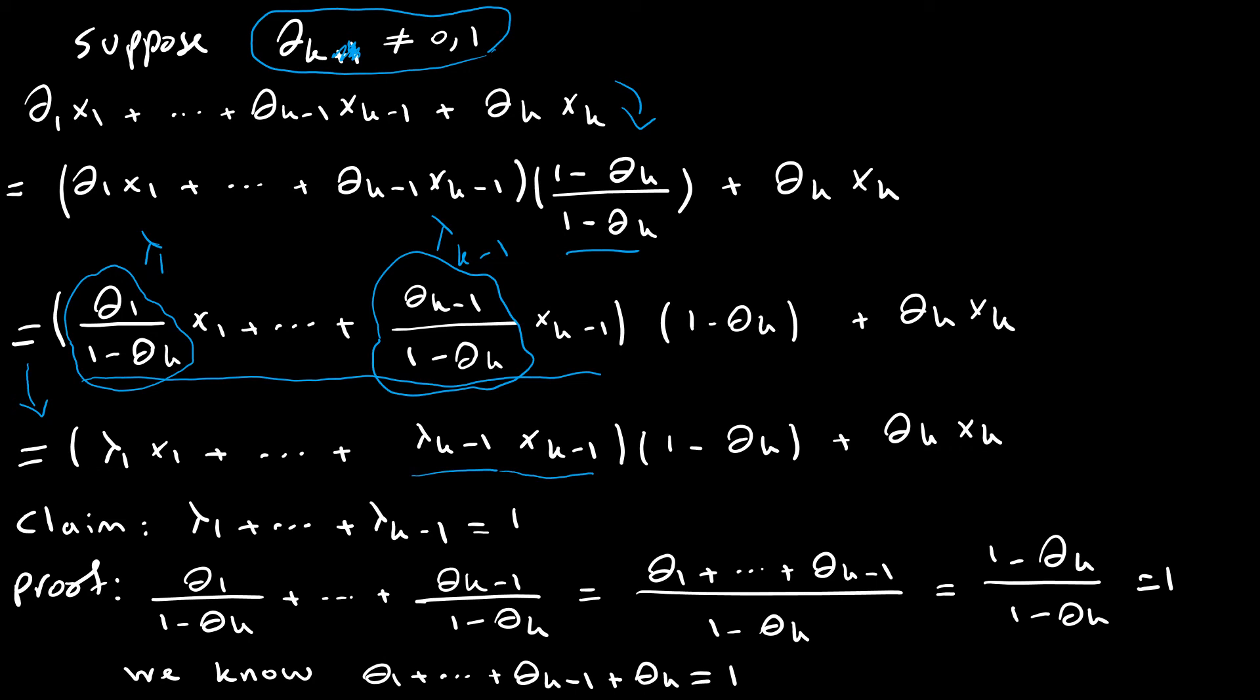Now, I am claiming λ₁ plus λ_{k-1} is 1. See how the proof goes. So we know λ₁ is θ₁ over 1 minus θ_k, and so forth. So since the common denominator is the same, we can sum over all the numerators. However, we know the sum of all θs is 1, and we can rearrange this to get 1 minus θ_k as the equivalent of the numerator here. And this is just 1. So we know all λ_i sum to 1.